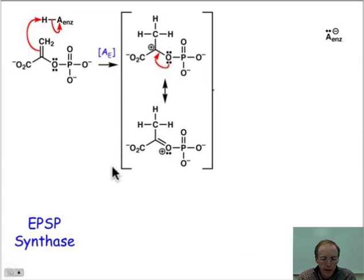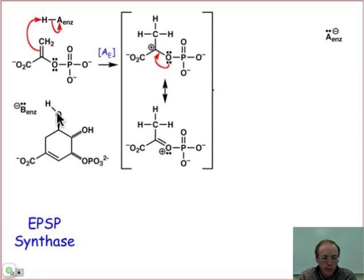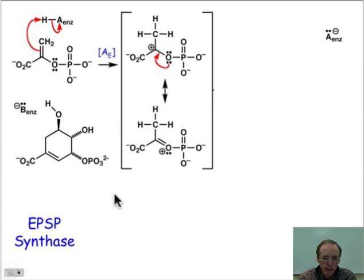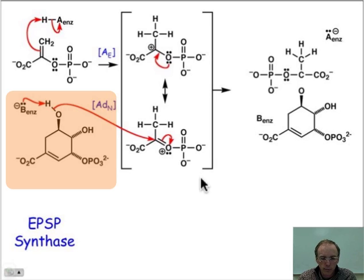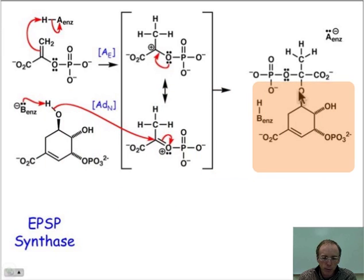Here we have the shikimate acid, and it's going to be this hydroxyl group which will serve as the nucleophile. It's going to be general base catalyzed. The addition step looks like this — it's a general base catalyzed ADN step that's going to make a new oxygen-carbon bond. The structure of that is shown here. We've now protonated the conjugate base as its conjugate acid.